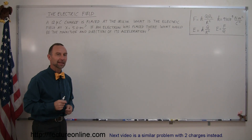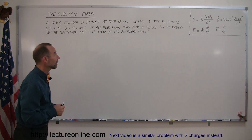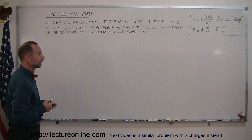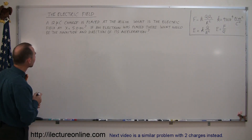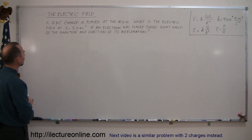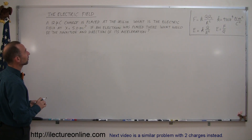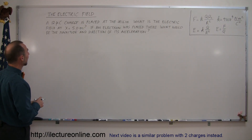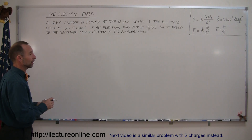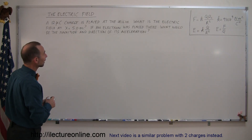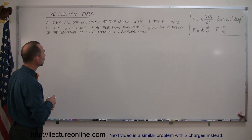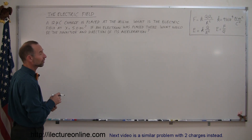Welcome to iLectronLine. Here we're going to do an example problem involving the electric field and charges. The problem says: a 12 micro coulomb charge is placed at the origin. What is the electric field at x equals 5 meters — that would be 5 meters to the right of the origin? If an electron was placed there, what would be the magnitude and direction of its acceleration?